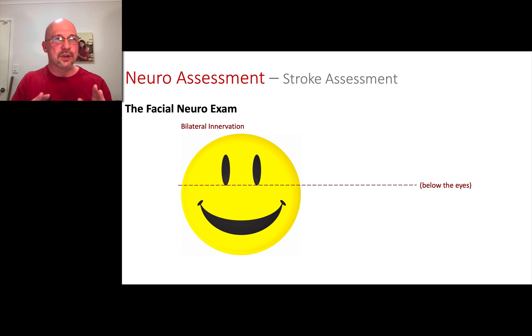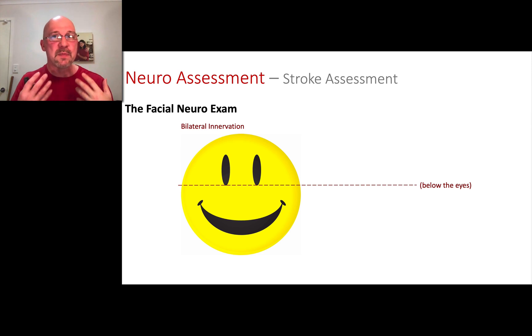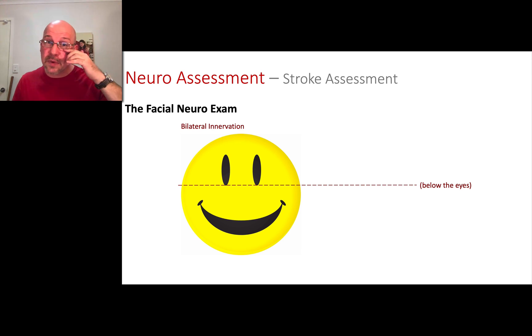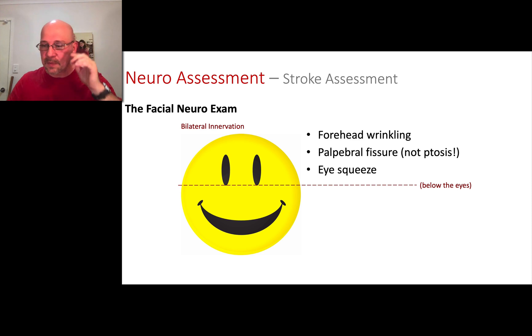We're going to throw in a few things to help comfort ourselves and make sure they're not actually having a stroke. What are the three things we check above the eyes? The first thing is forehead wrinkling, which we've already talked about. The next thing is the eye squeeze — we ask them to squeeze, or you can ask them to push up against your fingers.